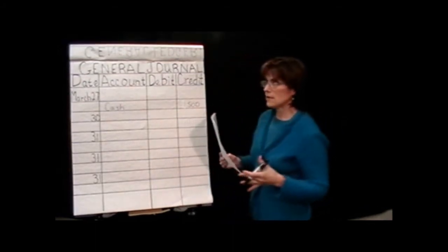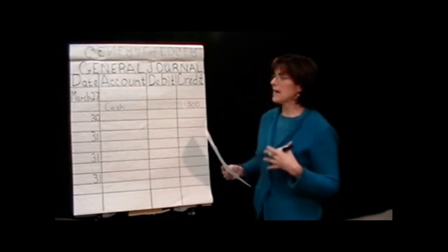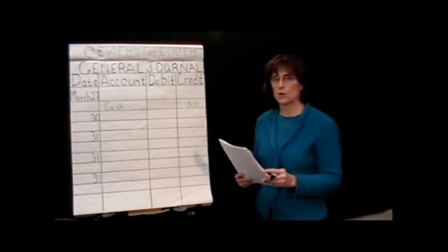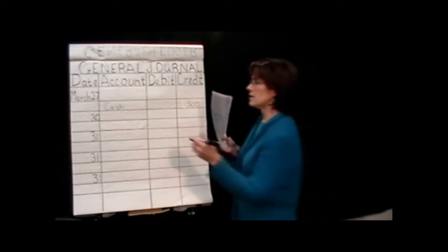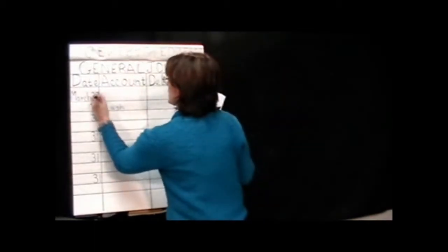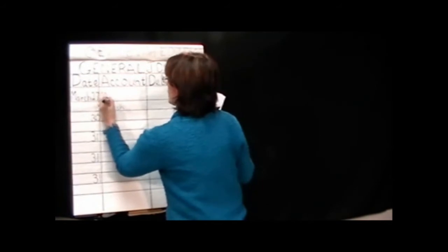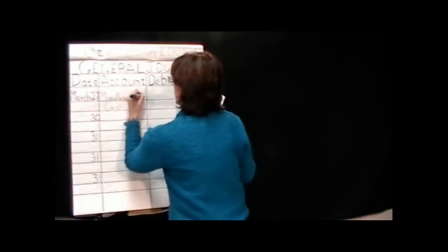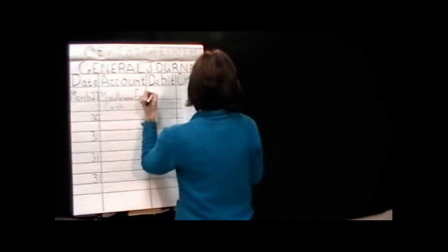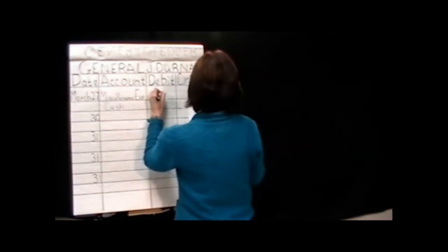So expenses are increasing. And increases in expense accounts, if you go back to your sheet and look, are recorded by debits. So I'm going to debit miscellaneous expense for $1,500. I'm sorry, $500. I don't know why I said $1,500.